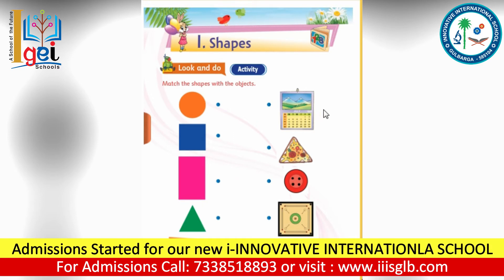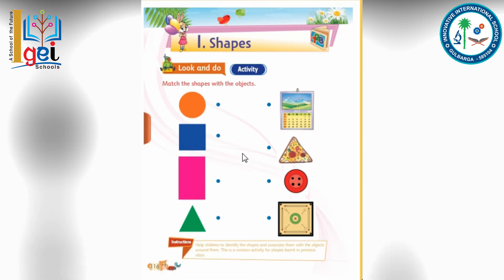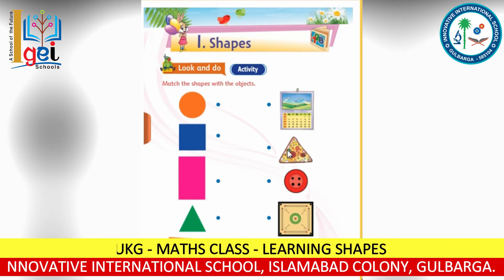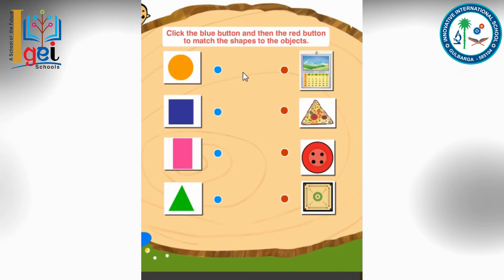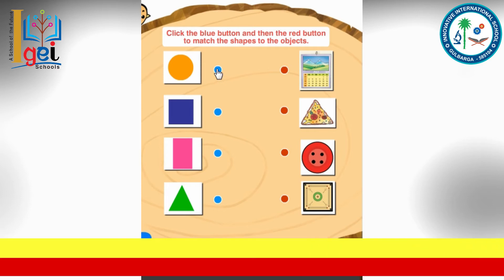So here you have to match with the following shapes. See where is the circle — there's a circle here and here. Where is the square — here. Then rectangle here. Triangle here. Follow this activity.